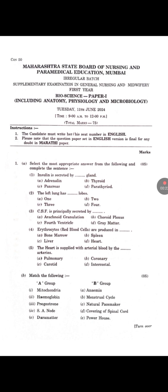Question 1: Select the most appropriate answer from the following and complete the sentence. 1. Insulin is secreted by which gland? Answer: 2. Pancreas. 2. Left lobe has how many lobes? Answer: 3.